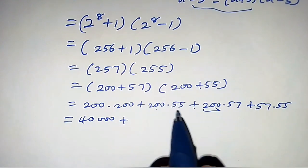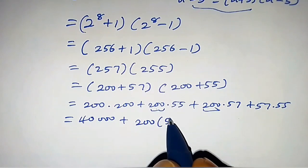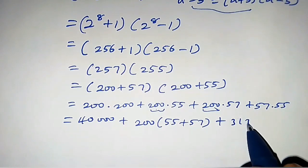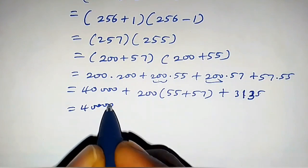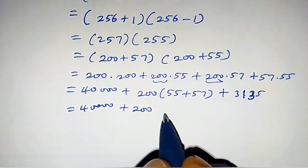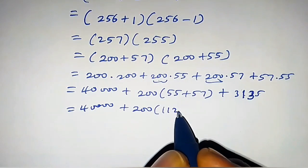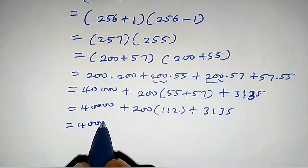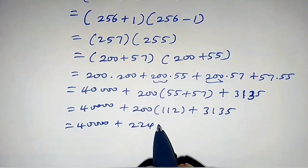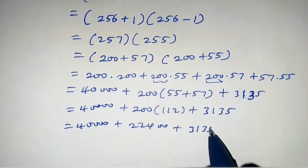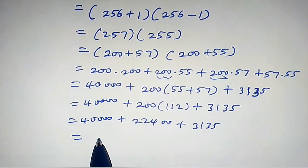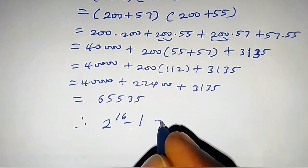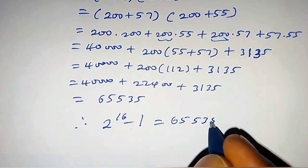This equals 40,000 plus 200 times 55 plus 57, which is 200 times 112, plus 3,135. This equals 40,000 plus 22,400 plus 3,135. If we add this, we are going to obtain 65535. So therefore, 2 raised to the power 16 minus 1 equals 65535, which is the required solution.